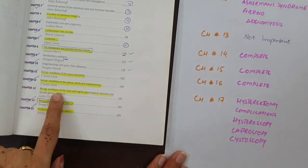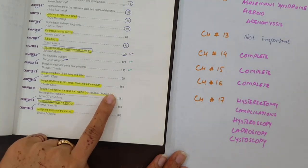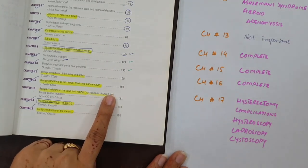Then there is chapter number 13, benign conditions of the vulva, vagina, and psychosexual disorders. This chapter is not important at all.